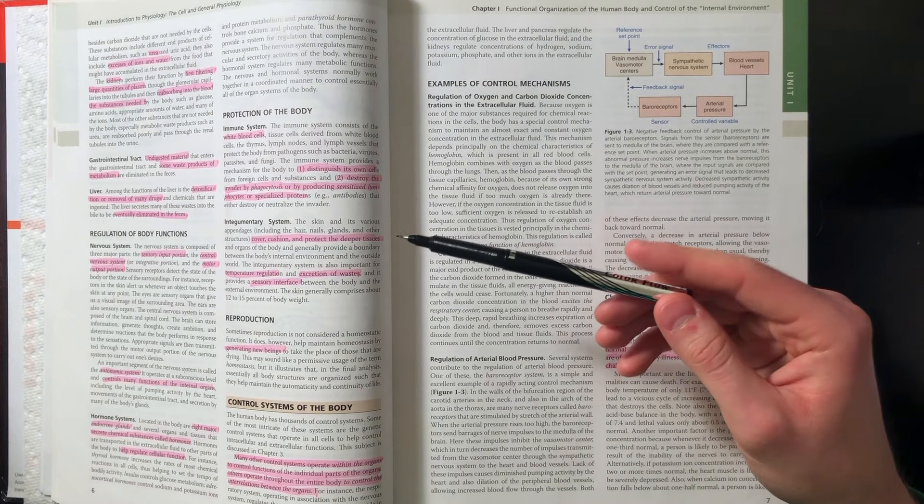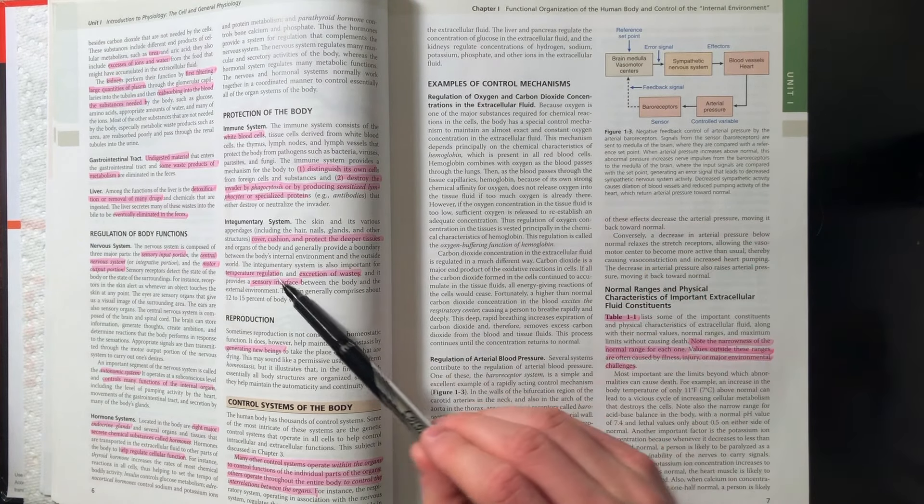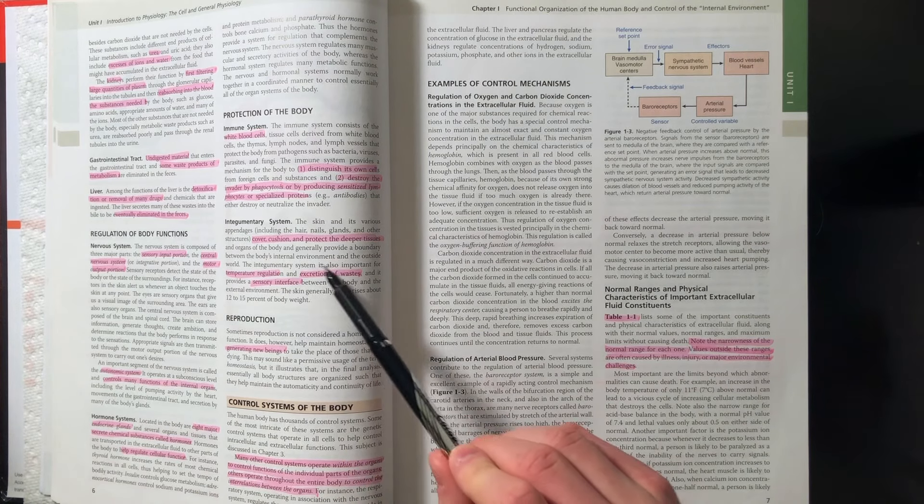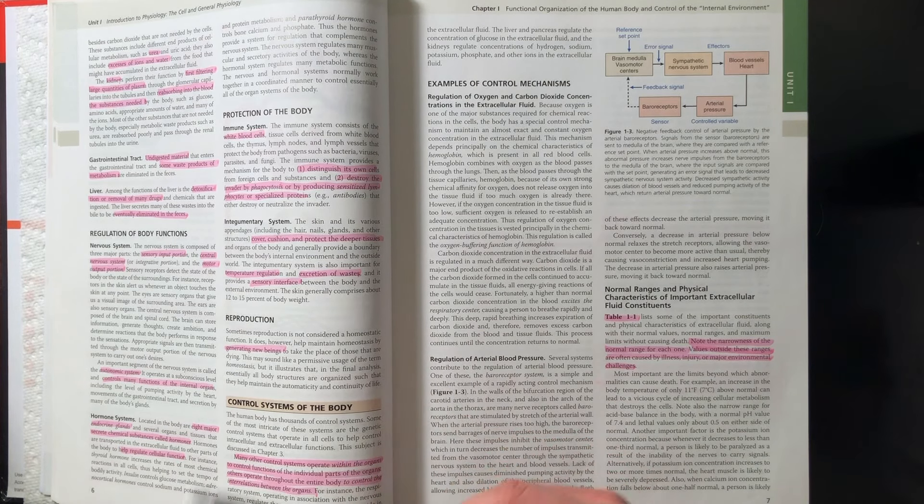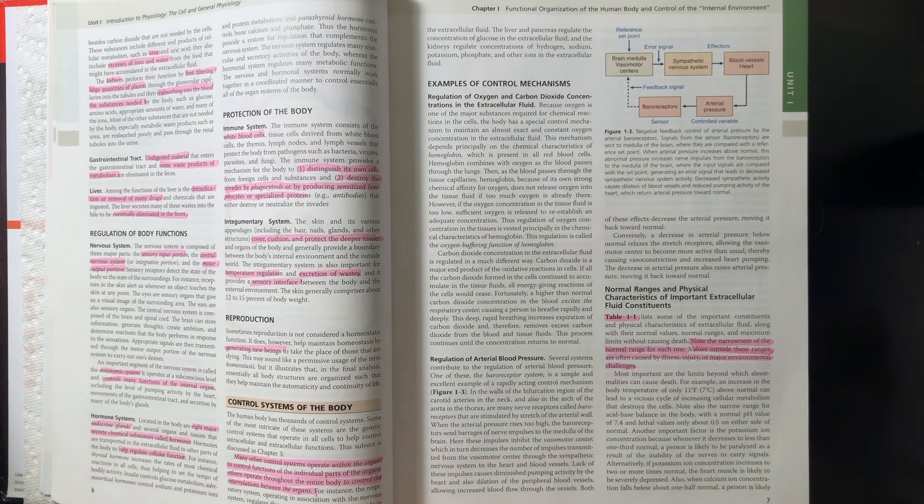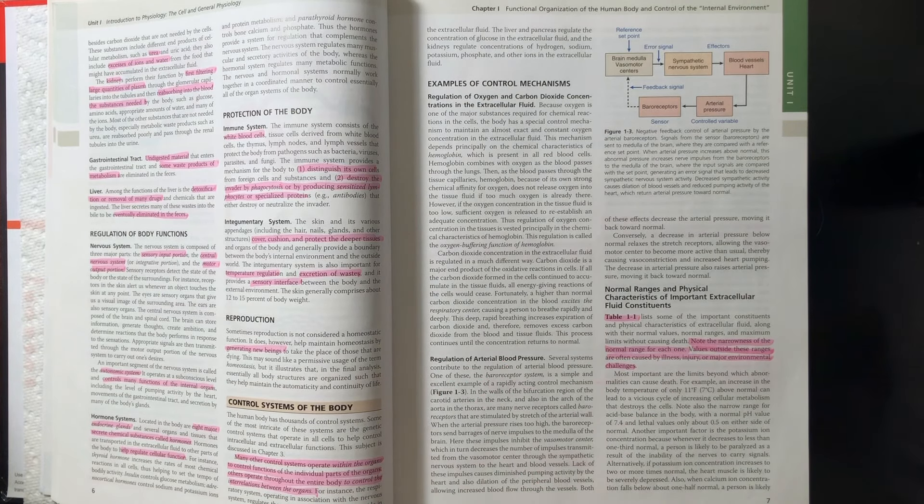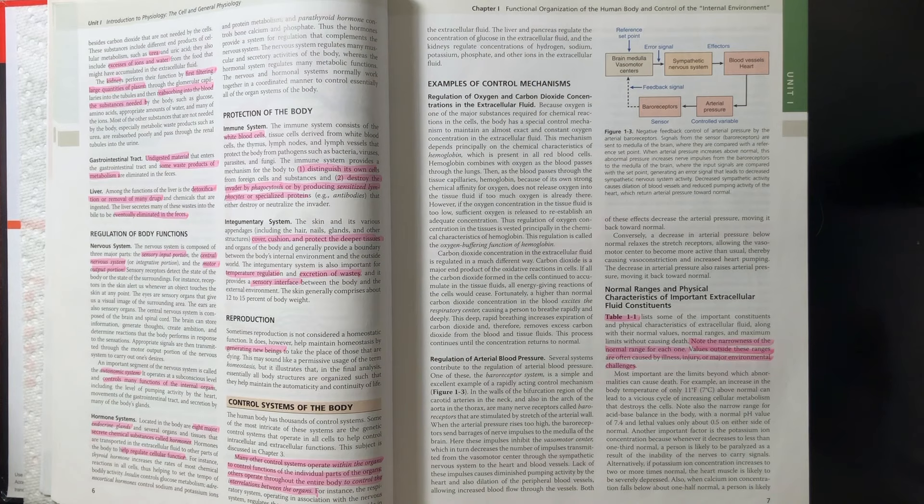We also have our skin, which covers, cushions, and protects our deeper tissues. But then also has functions in temperature regulation, excretion of various wastes, and also as a sensory interface as a way that we can actually feel our environment. And then reproduction, which is the way that we can continue to reproduce new human beings and continue living the good life.